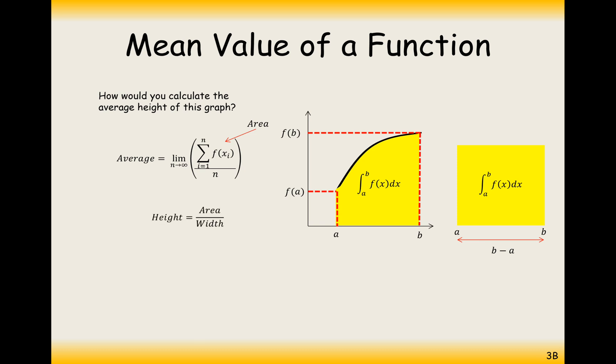So to work out the height or the average value of the function, the height, we're going to have to do area divided by width. So this is effectively what we've got here. We've got area on the top divided by width on the bottom. And the width of this function is going to be, so width of this interval is going to be b minus a.